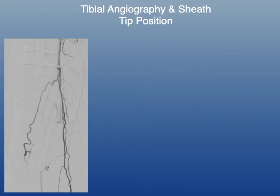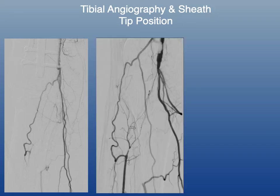Here's an example of why sheath position is so important. In this CLI patient with antegrade access and a sheath in the common femoral artery, you can see that although I can tell there's a popliteal artery occlusion, it's tough to figure out what the proximal cap really looks like and the distal reconstitution point is difficult to ascertain. With the sheath repositioned distally in the P2 segment, I get a clear view of the proximal cap with large collaterals arising from it — indicating a difficult antegrade recanalization where retrograde or dual access may be better suited.